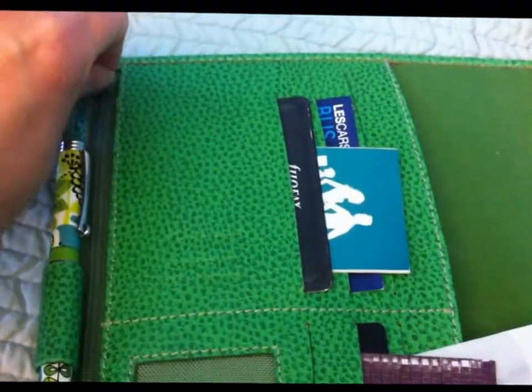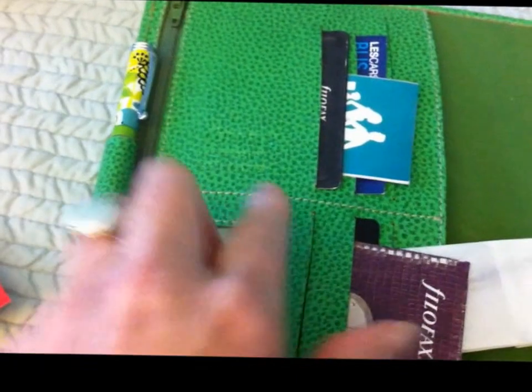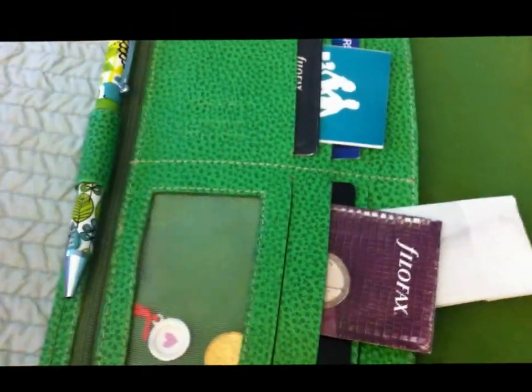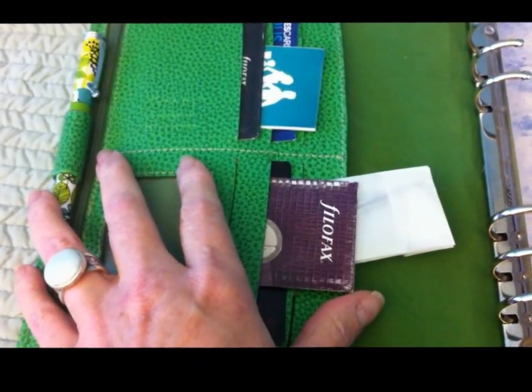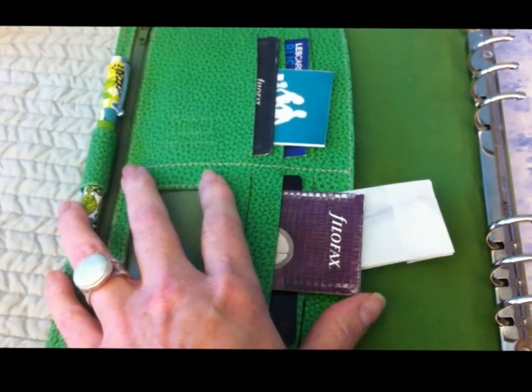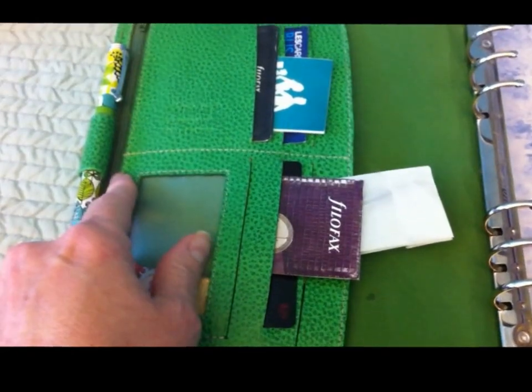It has a zipper pocket here that I don't have anything in because it's the whole length here and it's not a gusseted pocket, so it's a little hard to get things in and out of. I don't really know what would be a good thing to put in here. I'm thinking maybe some stamps.